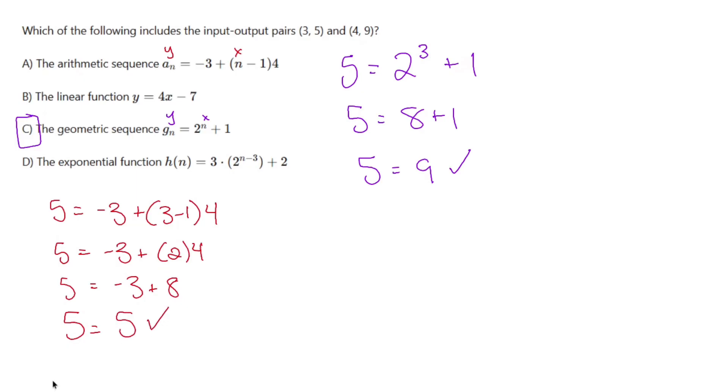Now that's one point. So to test the other one, we're going to plug in: 9 equals -3 + (4-1) times 4, which means -3 + 3 times 4 has got to equal 9.